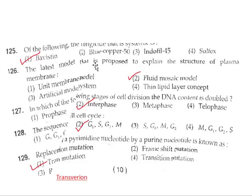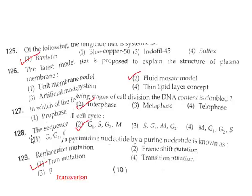Question 126: The latest model proposed to explain the structure of the plasma membrane is the fluid mosaic model, given by Singer and Nicholson. Option 2. Question 127: In which stage of cell division is DNA content doubled? This is in S phase. So the correct answer is option 2.